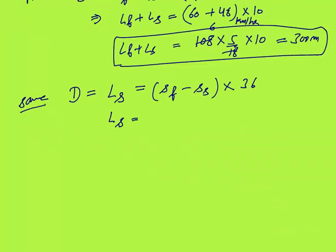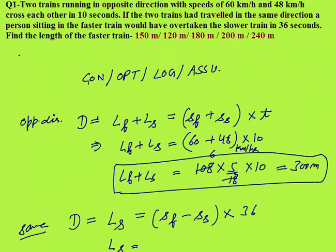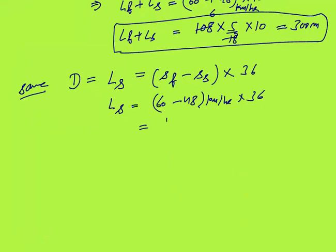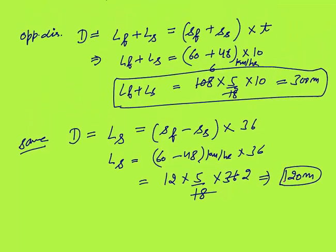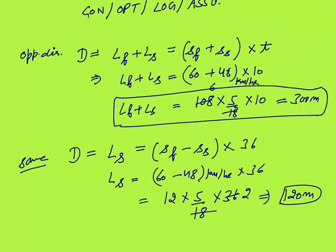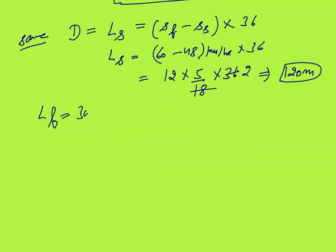Length of slower train = (60 − 48) km/h × 36 seconds = 12 km/h converted to m/s: 12 × 5/18 × 36 = 120 meters. So the length of the slower train is 120 meters. Since length of faster plus length of slower equals 300 meters, the length of the faster train is 300 − 120 = 180 meters.